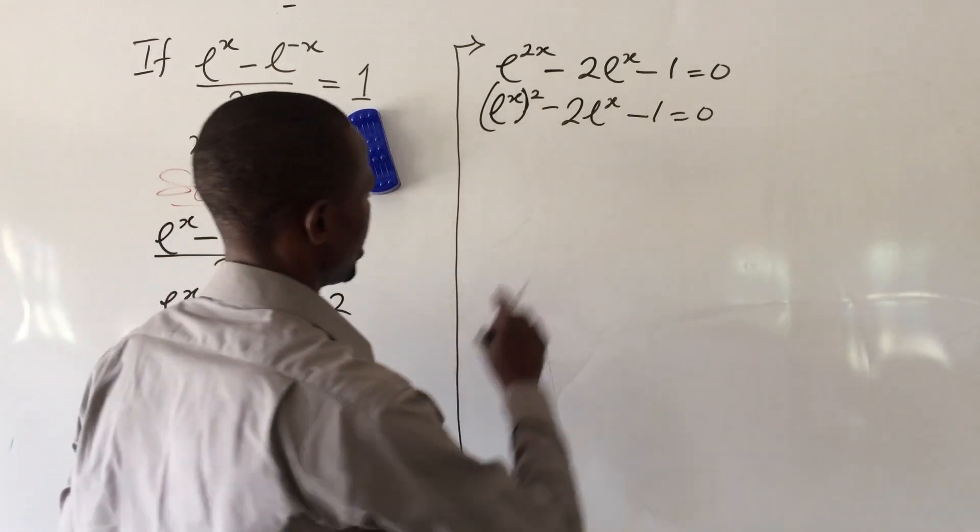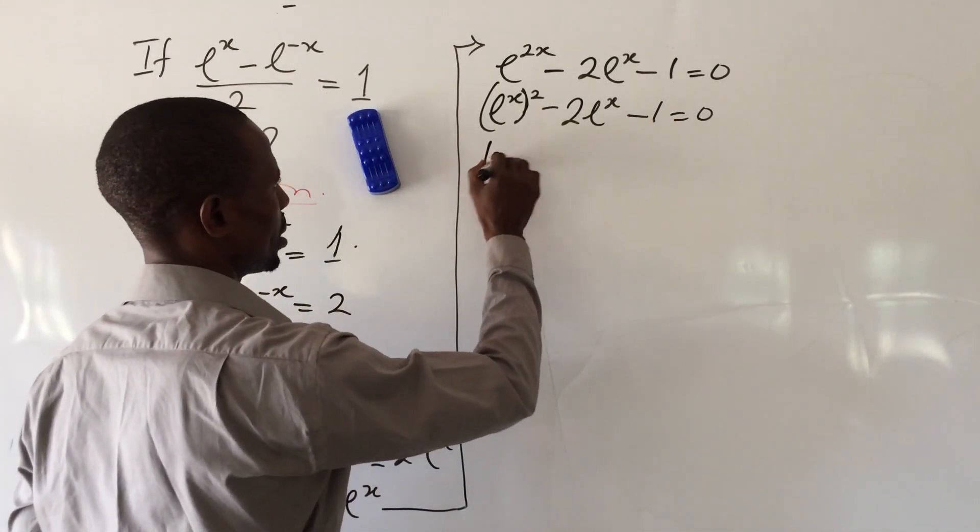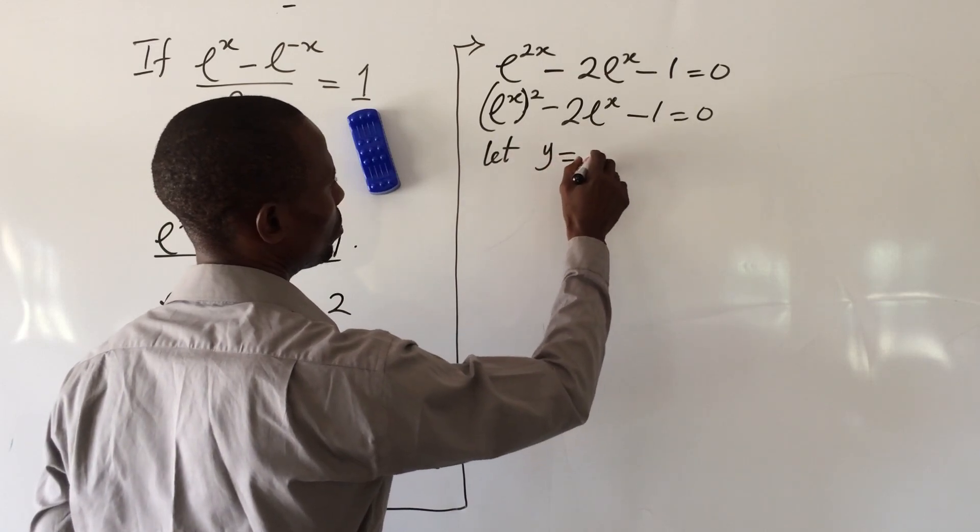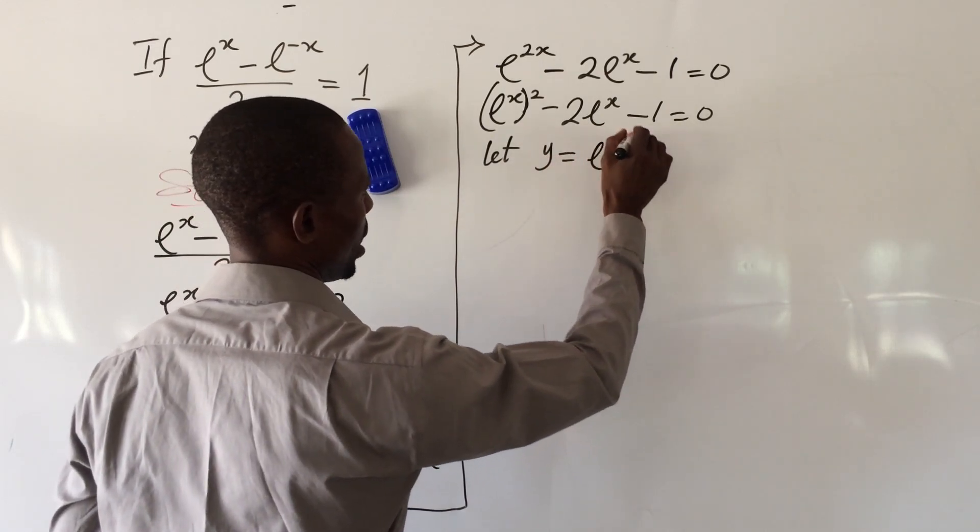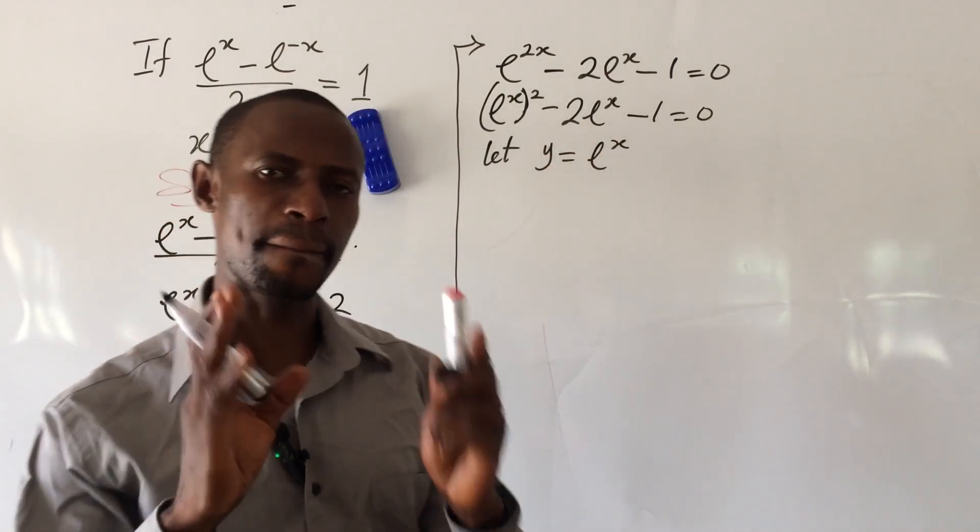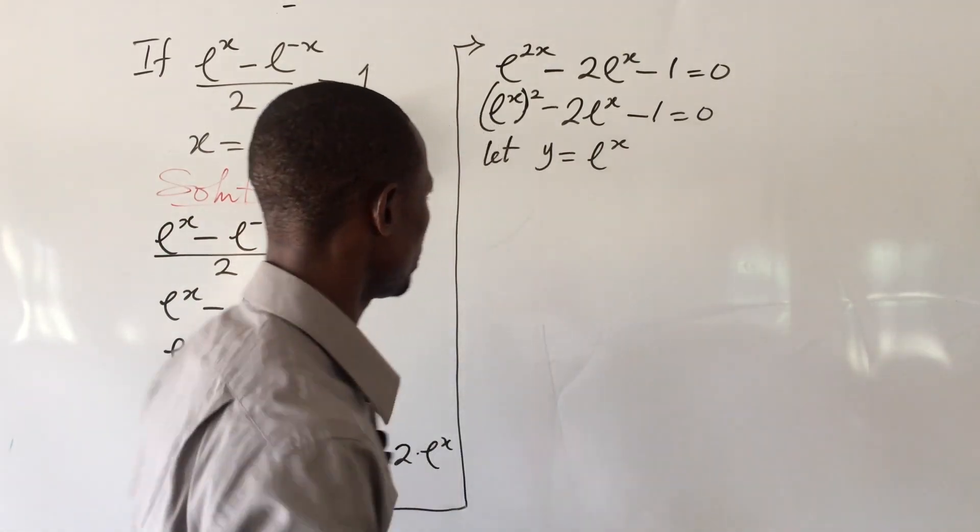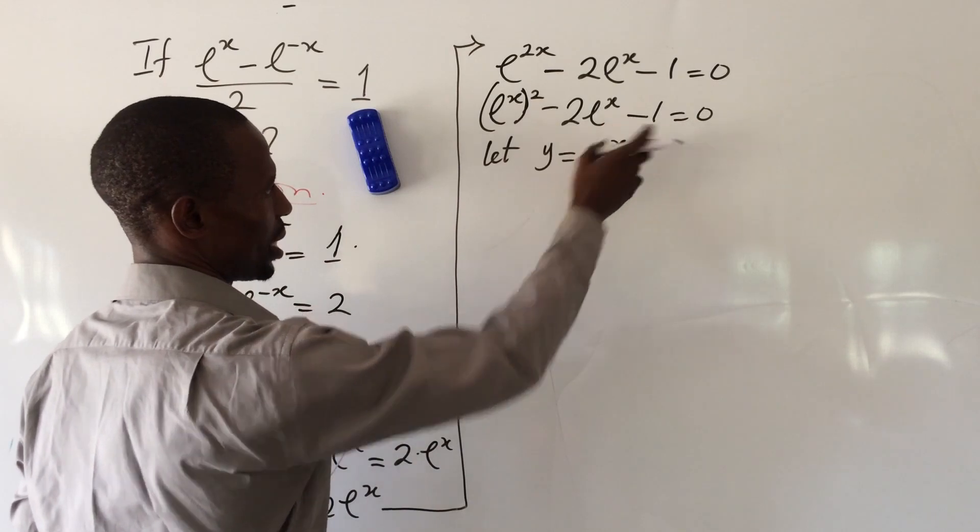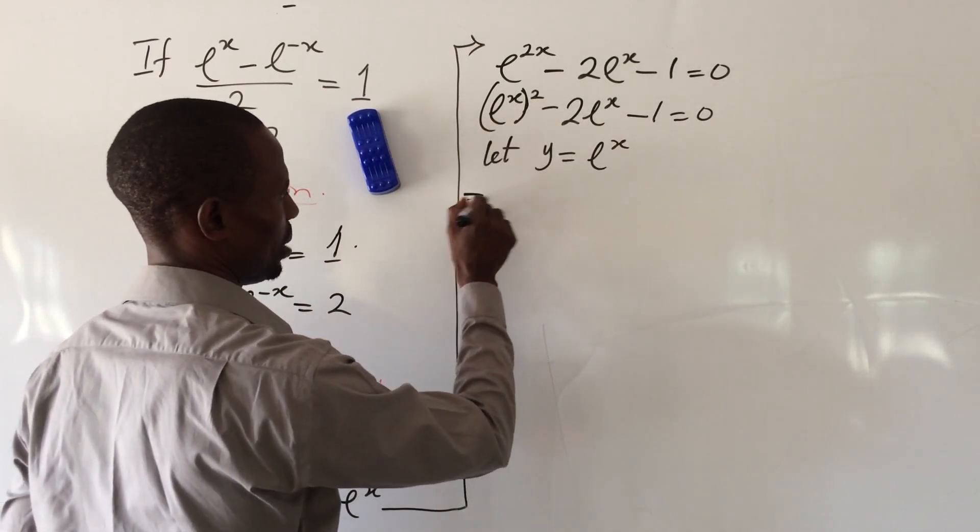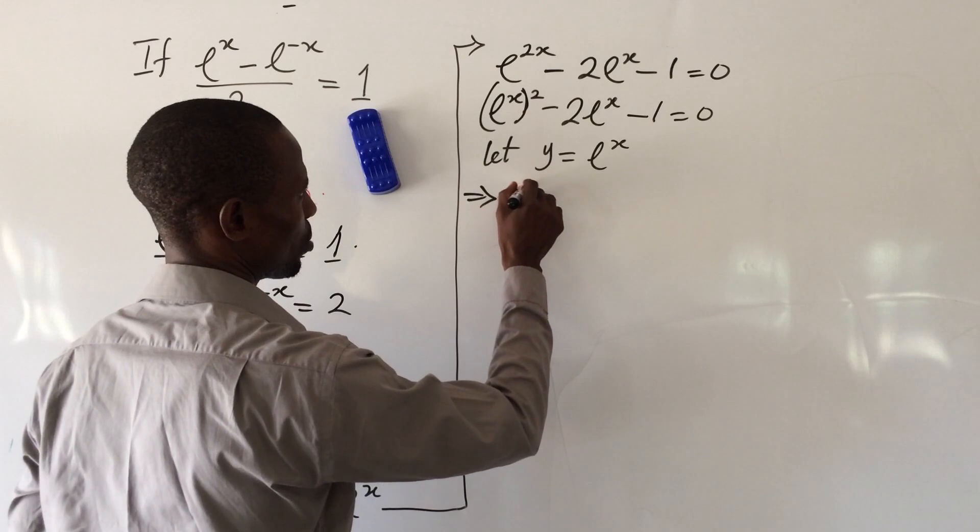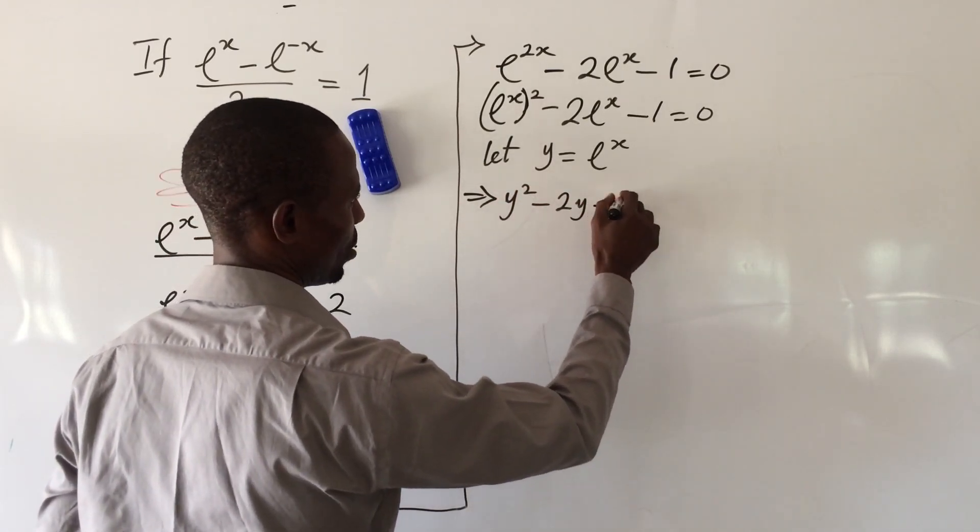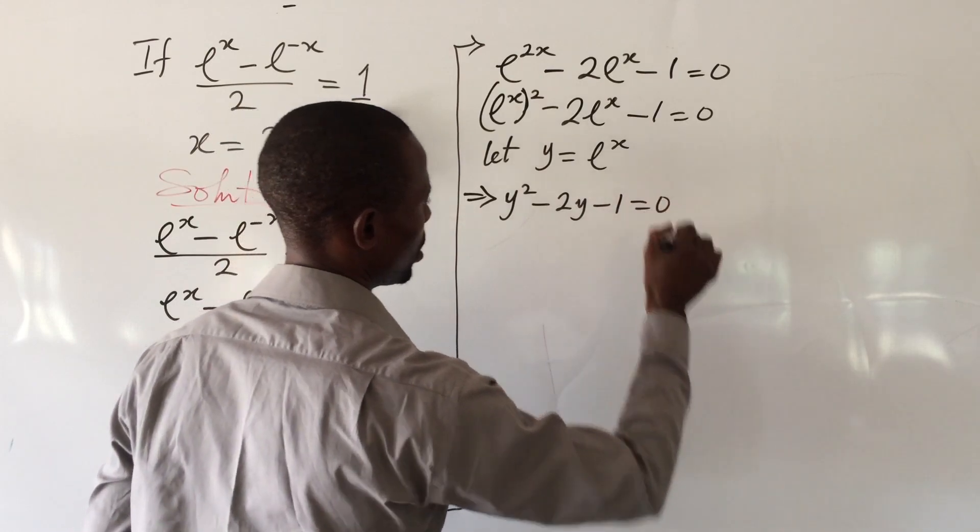From here, what if I decide to say let y equal e^x? So wherever I see e^x, I put in the value y. This now implies y^2 - 2y - 1 = 0.